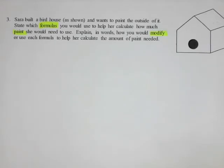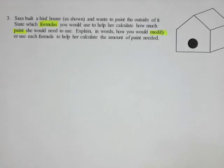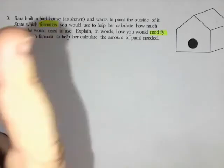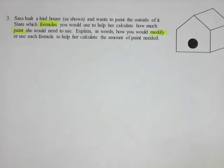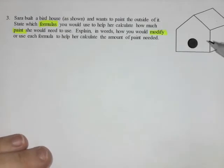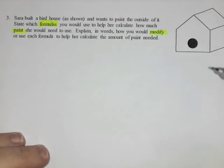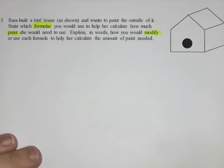This is a surface area question — it's asking how much paint she would need to paint the birdhouse. When she's painting, she's not filling the inside up with paint; that's what volume is. Volume is the inside space. Since she just wants to paint the outside, we want to know how much surface she needs to cover, which is surface area.